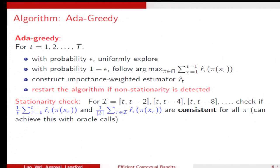And then for all pi, we check this. If there are two different, then we will rerun the algorithm. And this check can be implemented by Oracle calls.